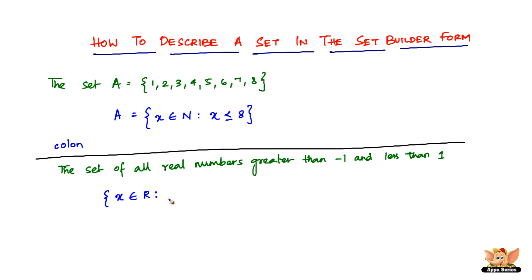Such that the element X is greater than minus 1. So we write: minus 1 is less than X. But X is also less than 1, so we write: X is less than 1. Close the bracket. That's all. So the set builder form description is: X belongs to R such that minus 1 is less than X and X is less than 1. This describes the set of all real numbers greater than minus 1 and less than 1.